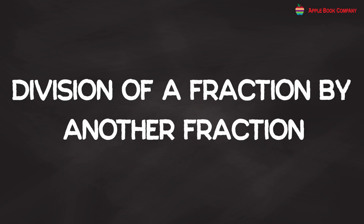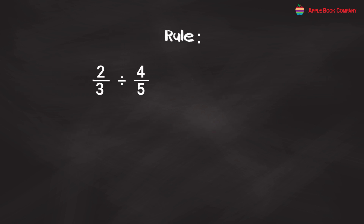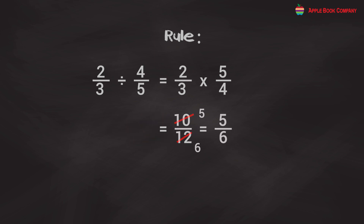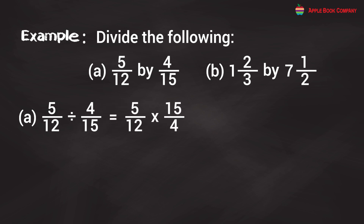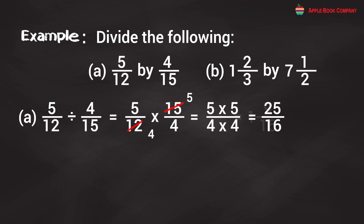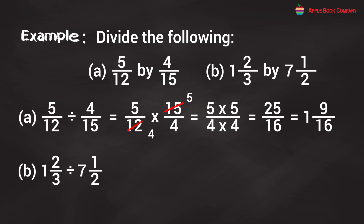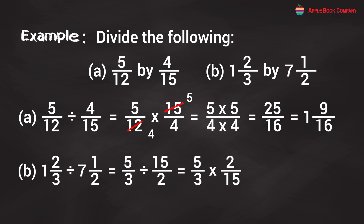Division of a Fraction by Another Fraction. Rule: To divide a fraction by another fraction, multiply the dividend by the reciprocal of the divisor. Example: 5/12 ÷ 4/15 = 5/12 × 15/4 = (5 × 5)/(4 × 4) = 25/16 = 1 and 9/16. Second problem: 1 and 2/3 ÷ 7 and 1/2 = 5/3 ÷ 15/2 = 5/3 × 2/15 = (1 × 2)/(3 × 3) = 2/9.